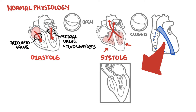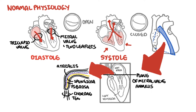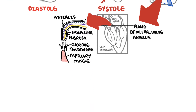The mitral valve leaflets lay within the mitral valve annulus, which separates the left atria from the left ventricle in this specific plane. The mitral valve leaflets contain three main layers: atrialis, spongiosa, and fibrosa. The leaflets are attached to the papillary muscles within the ventricles via the chordae tendineae. During ventricular contraction, the papillary muscles contract to pull on the mitral valve leaflets via the chordae tendineae to ensure that the mitral valve leaflets remain closed and do not prolapse into the left atria.